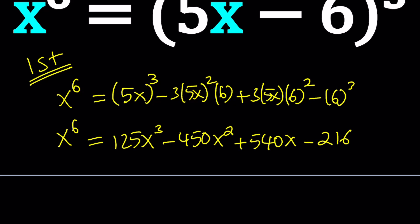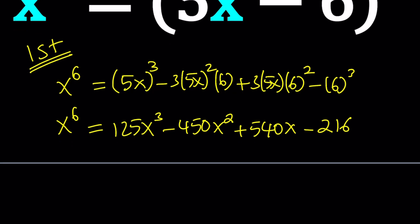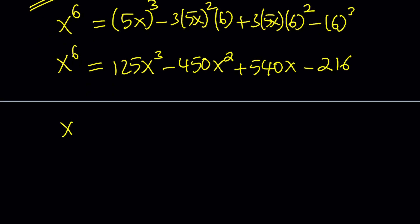Let's go ahead and simplify this. This is 125x to the third. 5 squared is 25, 25 times 6 is 150. Multiply by 3, you're going to get negative 450x squared. 6 squared is 36 times 5 is 180, times 3 is 540x minus 216. This is a polynomial equation, but let's put everything on the same side so we can make a hexic.